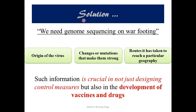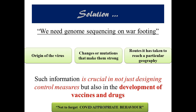The solution for this variant of concern is genome sequencing — we need genome sequencing on a war footing. This will help us understand the origin of the virus, how mutations make it stronger, and the routes it has taken to reach a particular geography. If detected in India, genome sequencing helps us understand how it arrived here. Such information is crucial not just in designing control measures but also in the development of vaccines and drugs, so the government should definitely focus on genome sequencing.